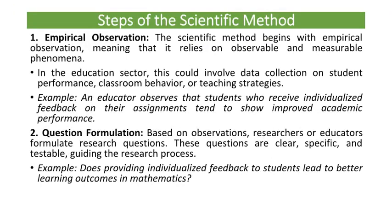Now let me discuss various steps of the scientific method. Step 1: Empirical Observation. The scientific method begins with empirical observation, meaning that it relies on observable and measurable phenomena. In the education sector, this could involve data collection on student performance, classroom behavior, or teaching strategies. Example: an educator observes that students who receive individualized feedback on their assignments tend to show improved academic performance.